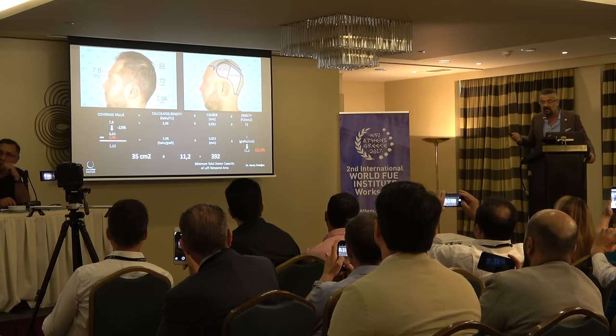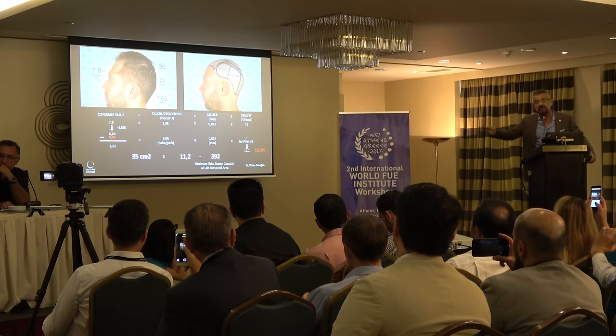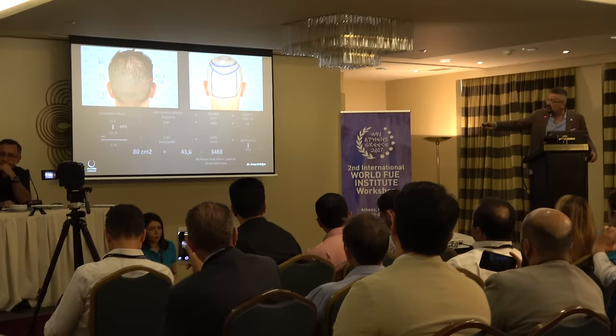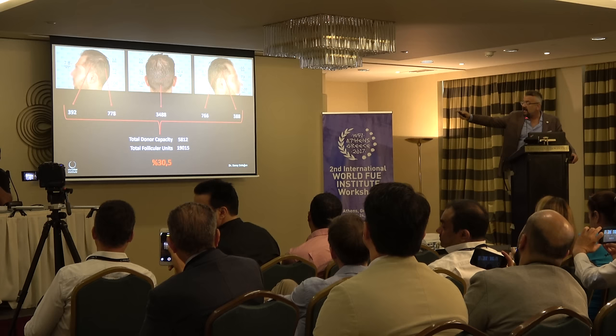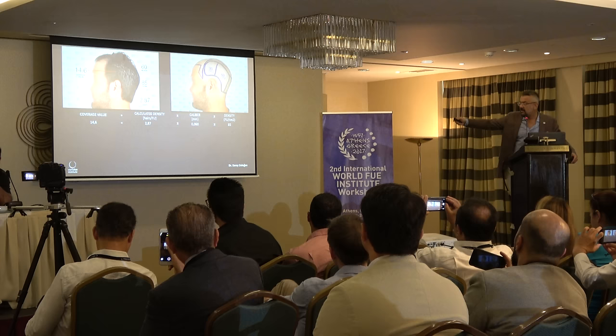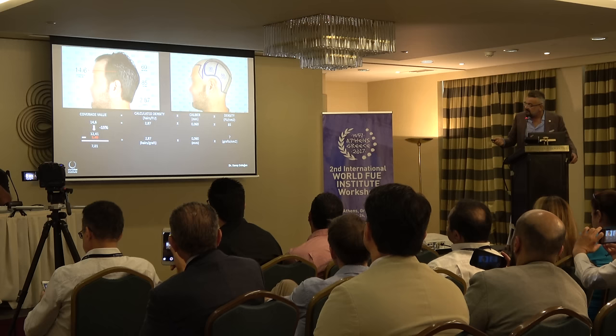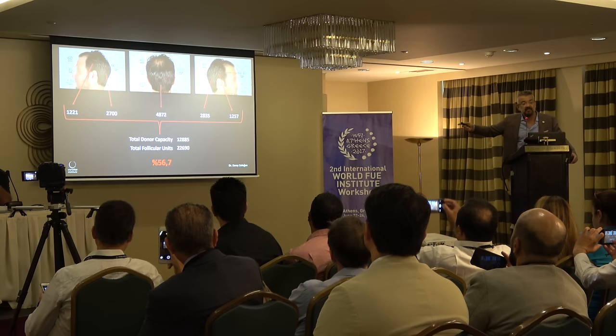You can adapt this system: for example, if your estimated hair-per-graft average is 2.06 but the skin is hard and your actual average is 1.8, you adapt the number accordingly. When I repeat the calculation for left parietal, occipital, and the right side, the total donor capacity for this patient is 5,812 grafts — which is only 30.5% of his total follicle number in the donor area. For the right-side patient, his coverage value is 14.6 at the left temporal area with a caliber of 60 microns. Running the same system through parietal, occipital, and right side, I find 12,885 grafts — which is 56% of his total follicle number. The first patient is 30%, this one is 56%.